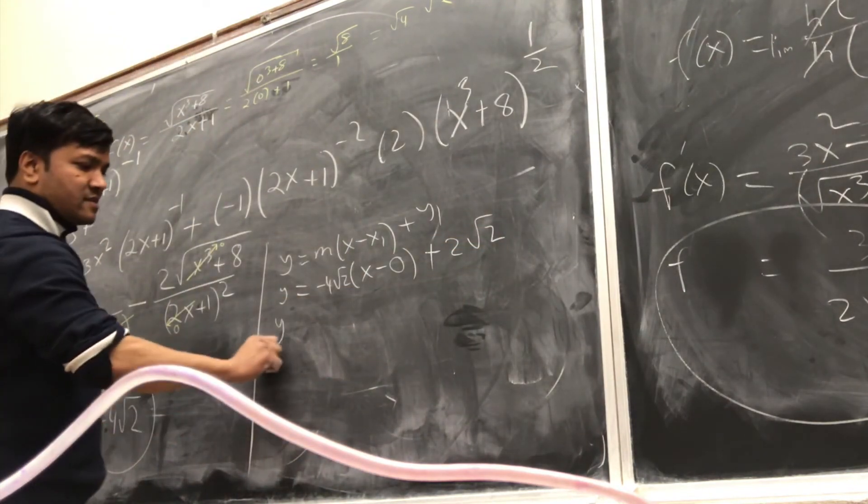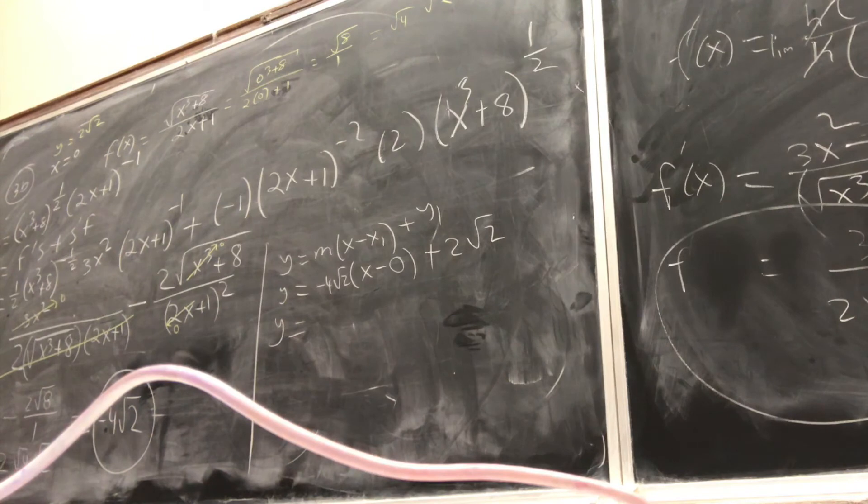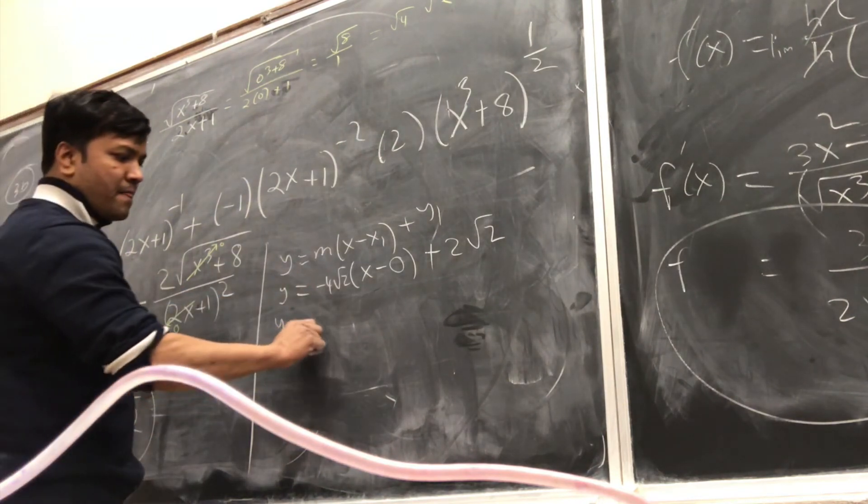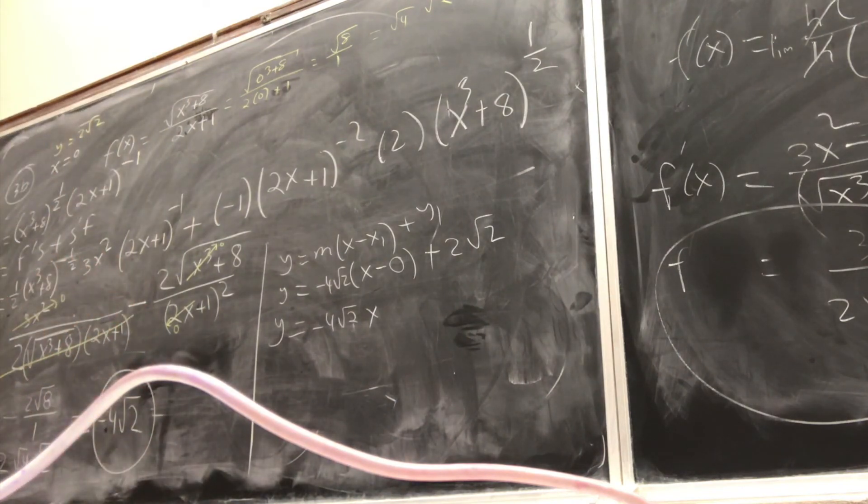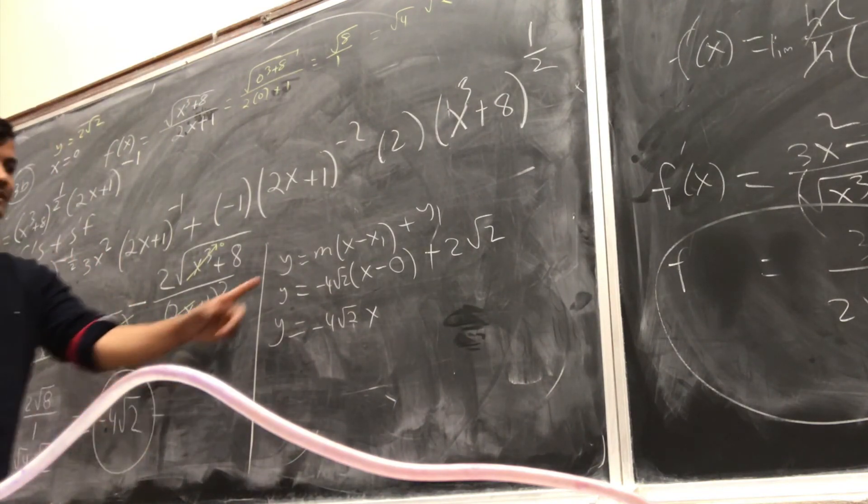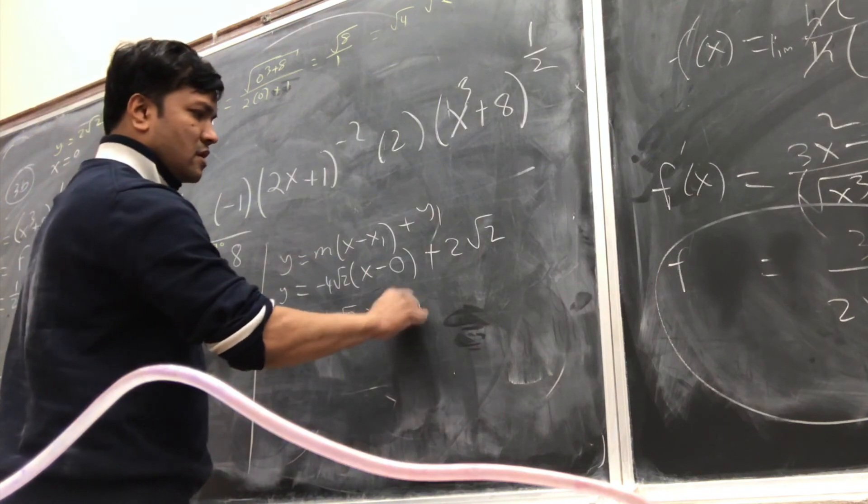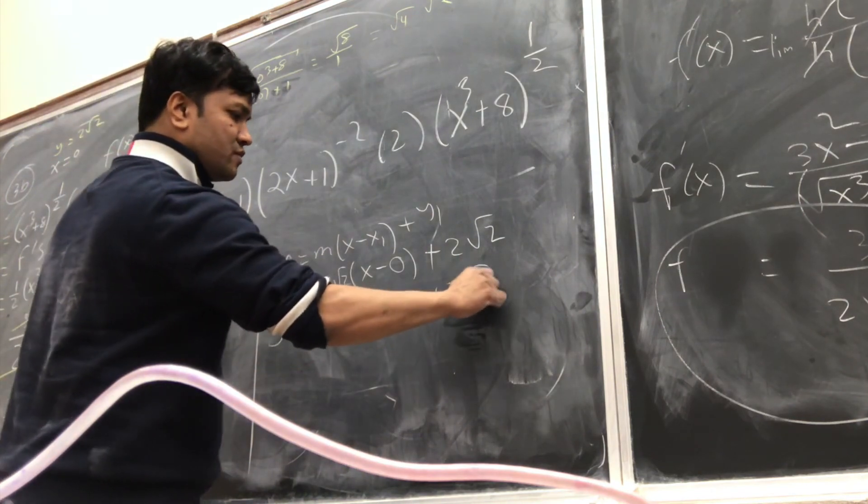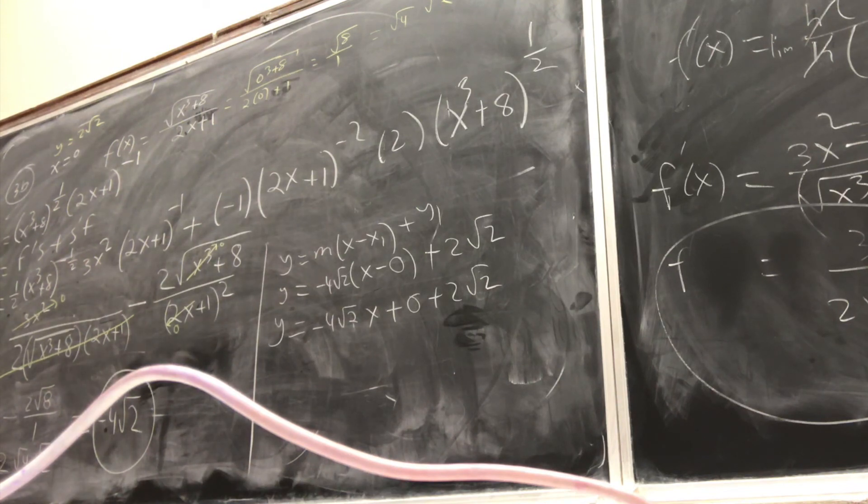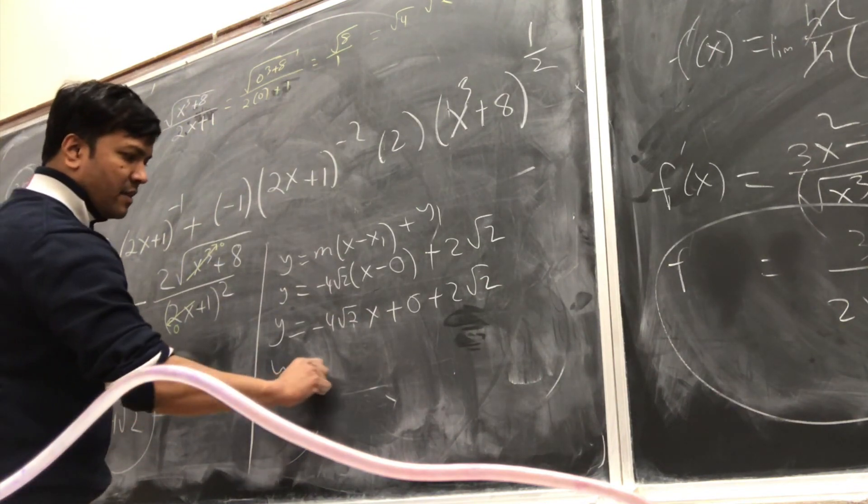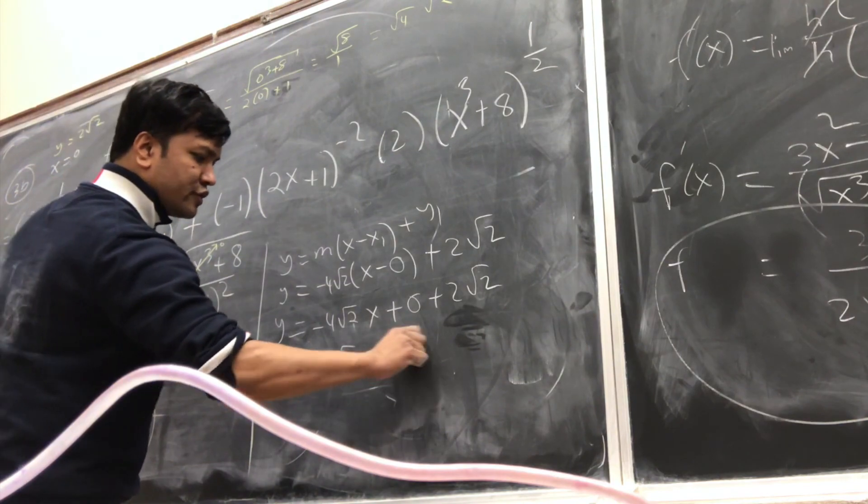I'll check the answer because I solved it at home. So minus 4 square root of 2x, right? Plus 0, plus 2 square root of 2. So what do you get? y is minus 4 root 2x plus 2 root 2.